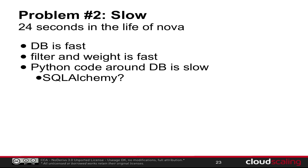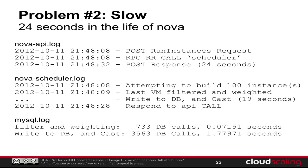From the analysis: the database is fast — under two seconds for the whole 24-second window. Filtering and weighing is actually very fast. The actual scheduling algorithm isn't the best but it's not slow. The Python code around the database is actually pretty slow. We use SQLAlchemy, which allows any database backend, but the code isn't optimized and a lot of time is spent in the SQLAlchemy layer building models and translating to SQL queries. One potential solution is to reduce the number of database calls. More optimization of the SQLAlchemy code itself is also needed — that's planned for Grizzly.